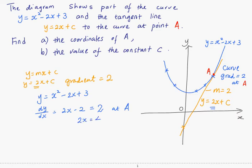Solving this equation, you get x equals 2. That means point A has an x coordinate of 2.